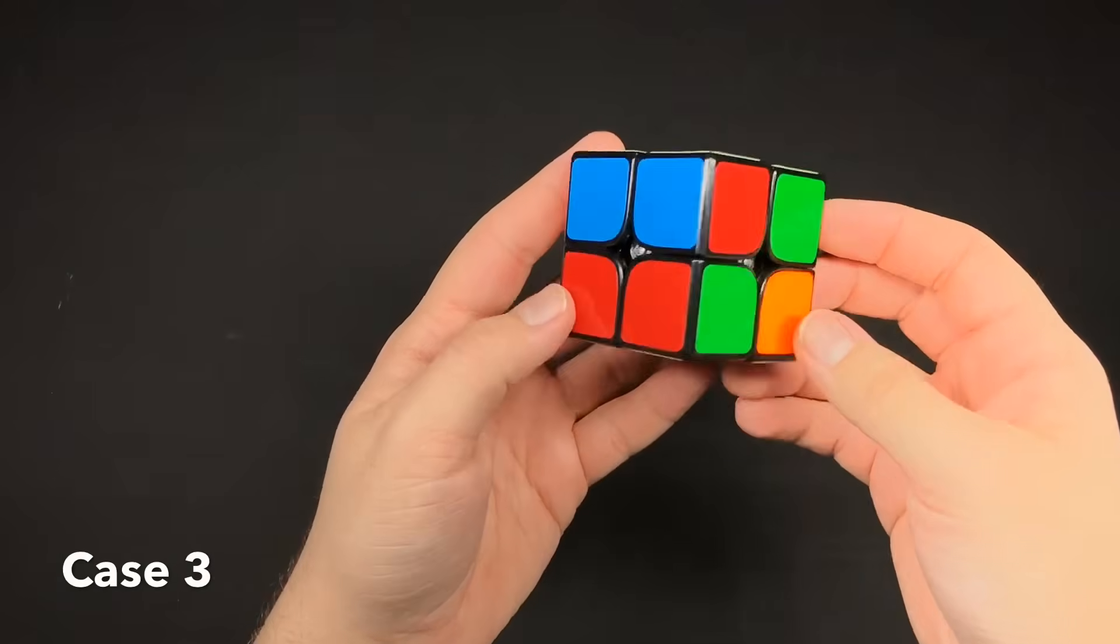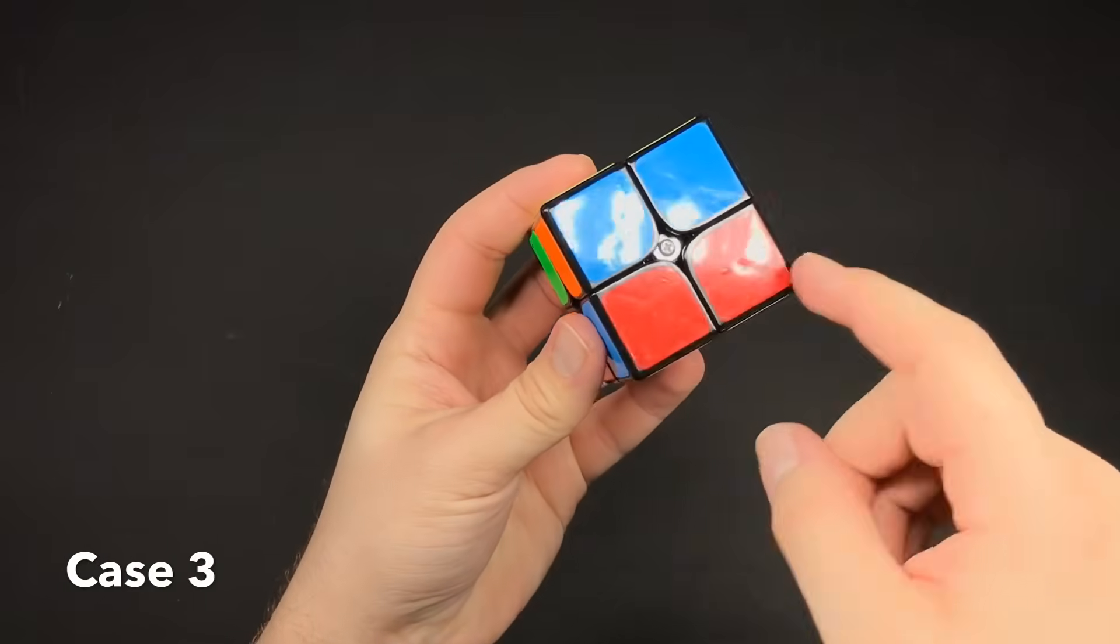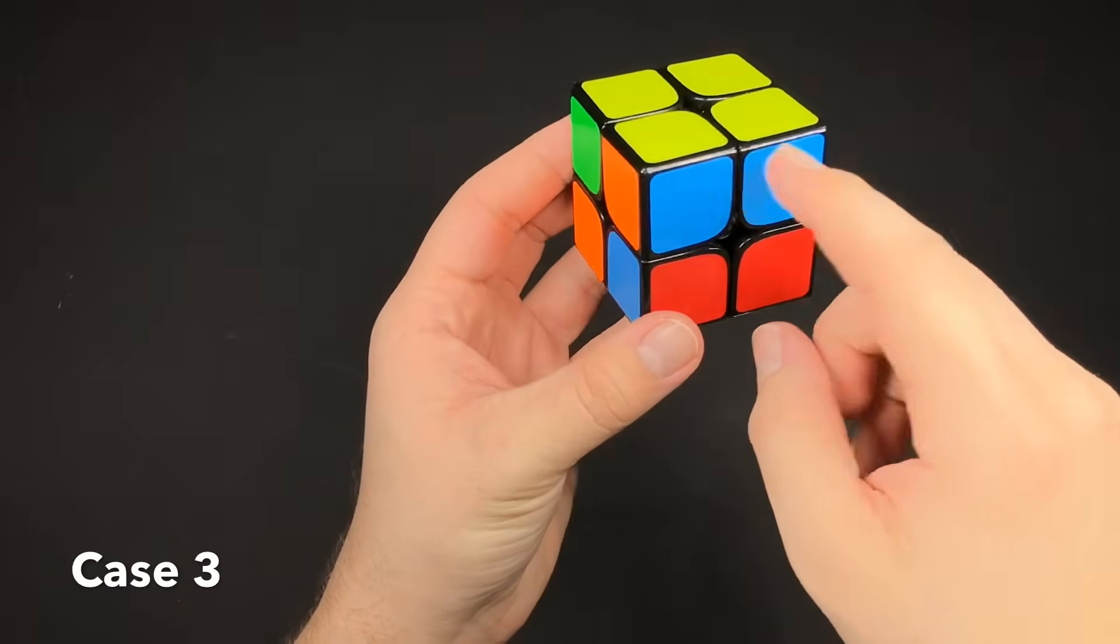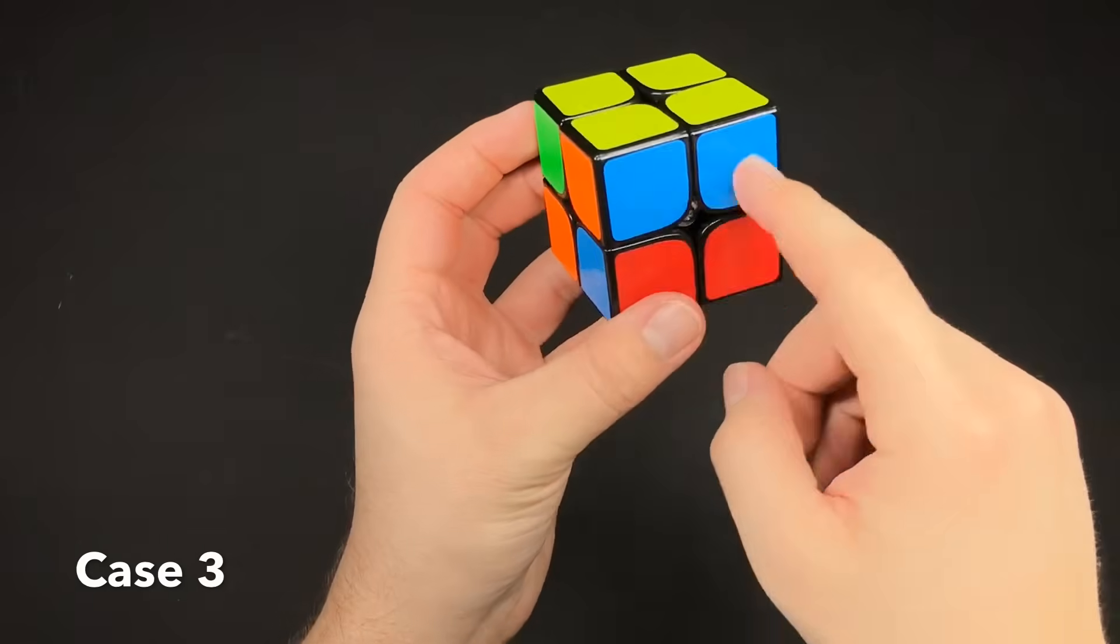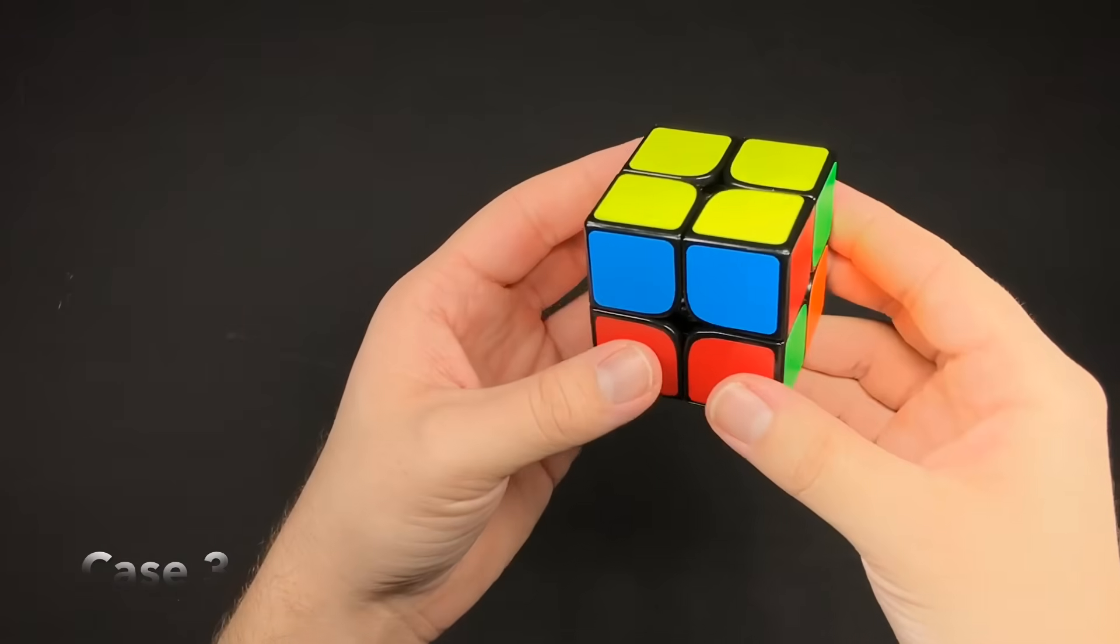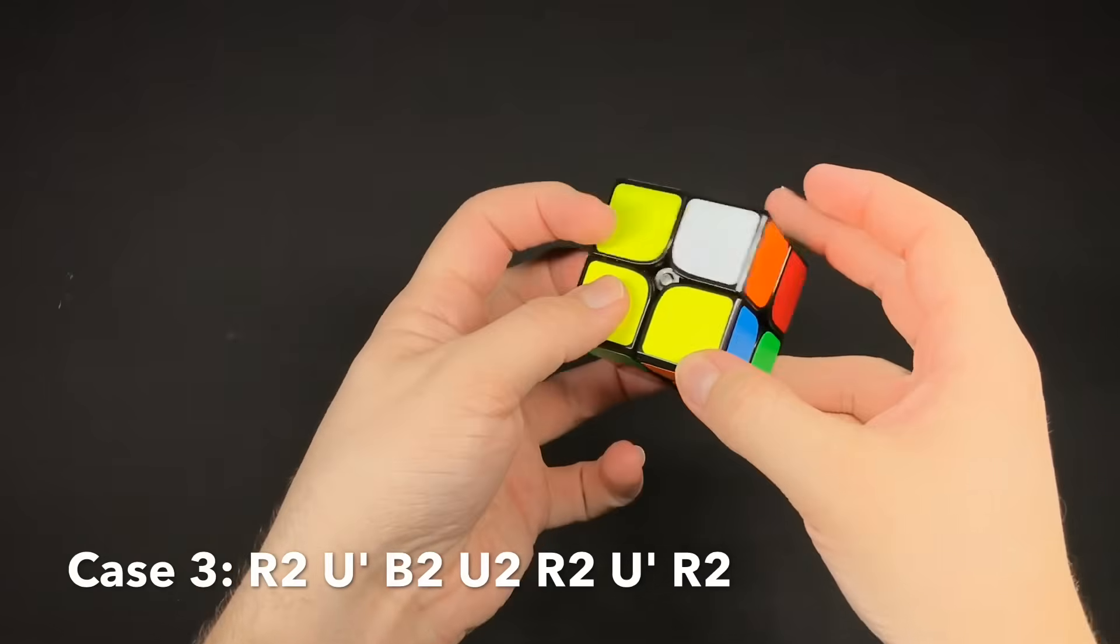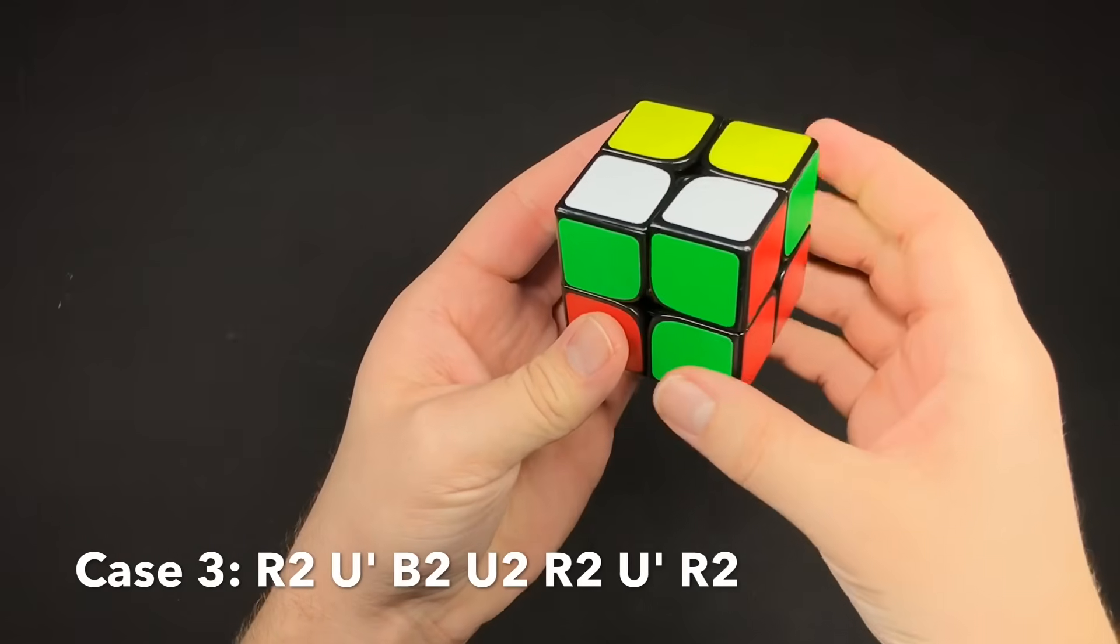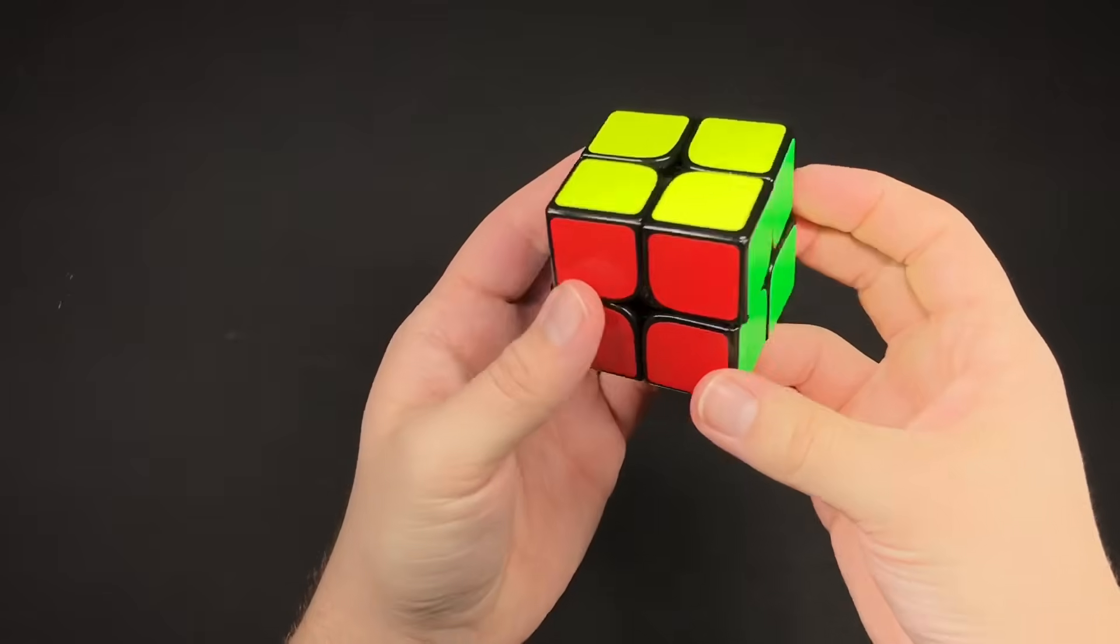So then on to the other cases. Looking at the bottom layer, you have two colors in a bar and then the other ones are not matching. And then on the top side, you also have two in a bar. You're going to line up the two bars, no matter which color they are. And you do this algorithm. And then B2. And then realign the top layer.